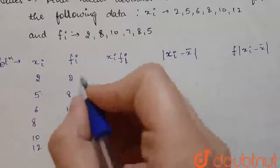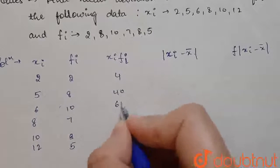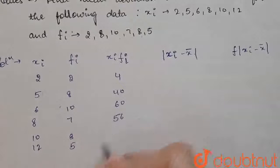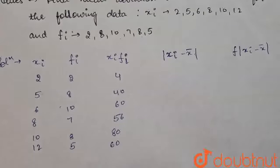Xi into fi will be 2, 2 is 4, 5, 8 is 40, 60, 7, 8 is 56, 8, 10 is 80, 5, 12 is 60.